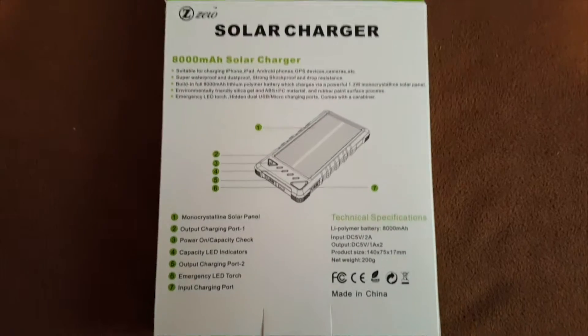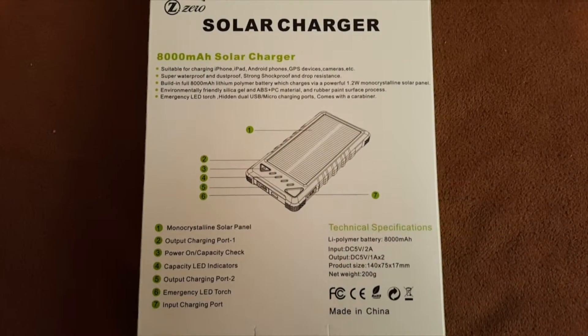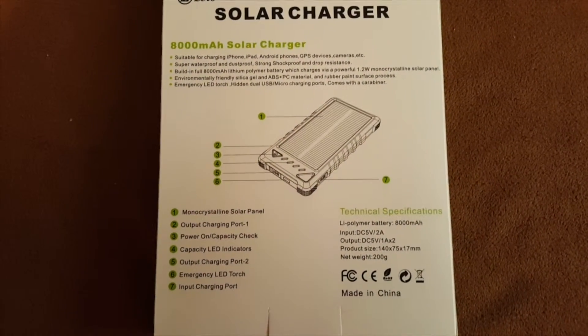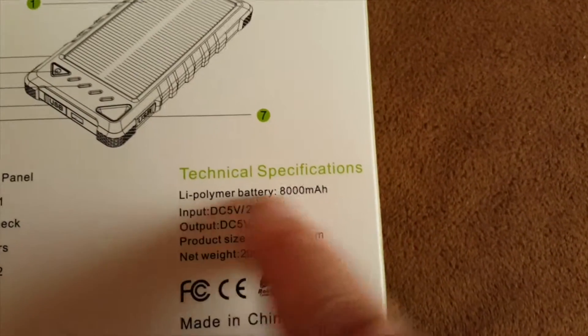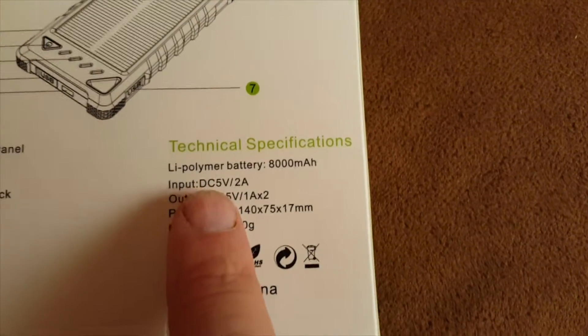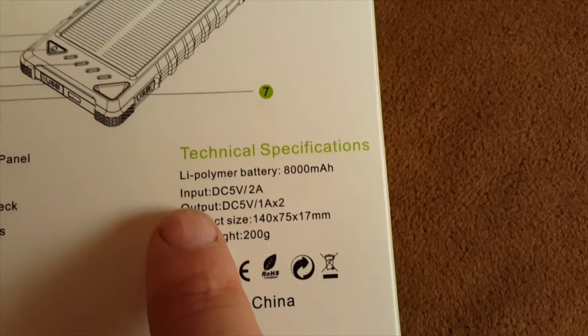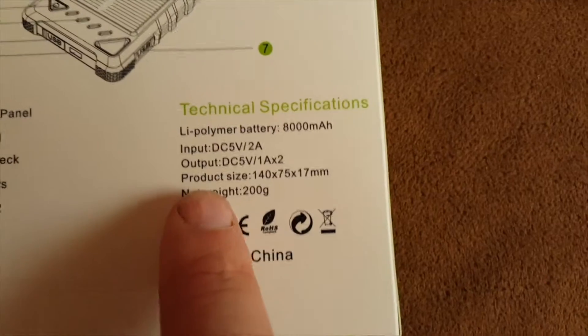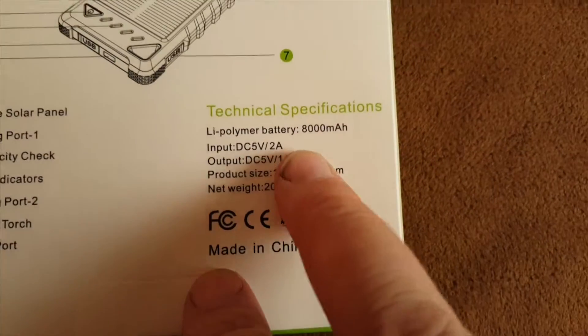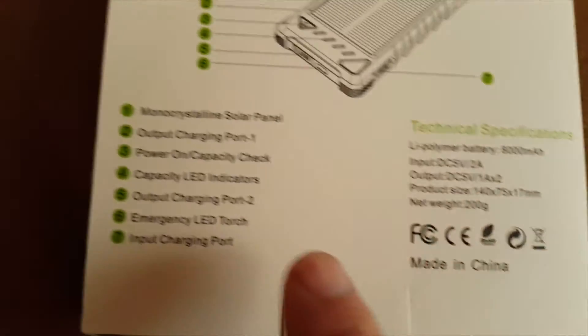I'll just hold it right here nice and steady, pause the screen so you can check out everything. What I'm going to show is it is a LiPo battery, input 2 amps at 5 volts, output 1 amp by 2 plugs, and it's 200 grams. That's the dimensions.